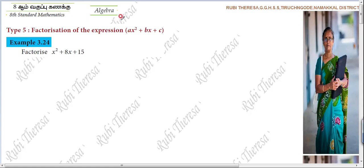And now, Type 1 isn't here. This is Ruby Teresa. Type 5: Factorization of the expression ax squared plus bx plus c. Understand?